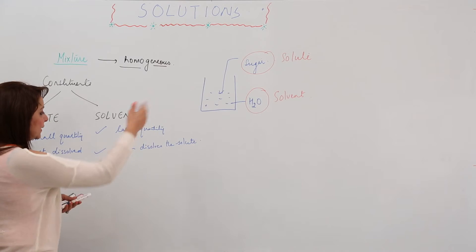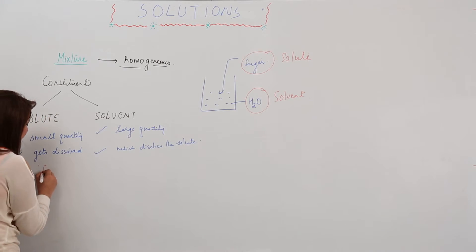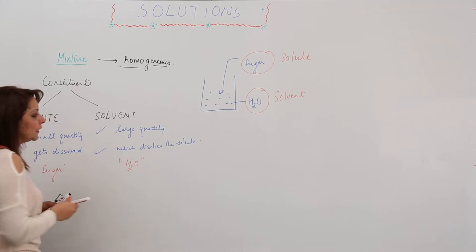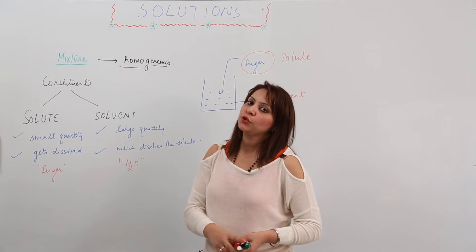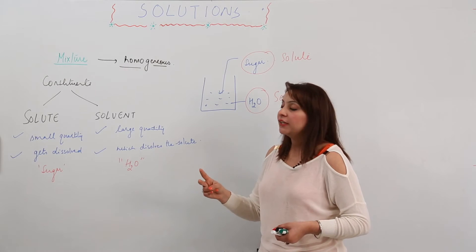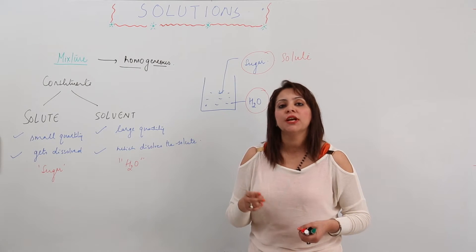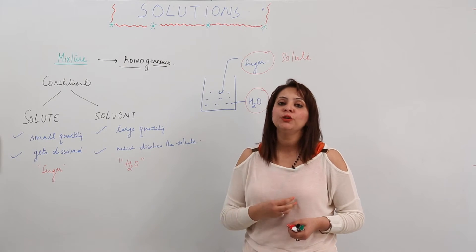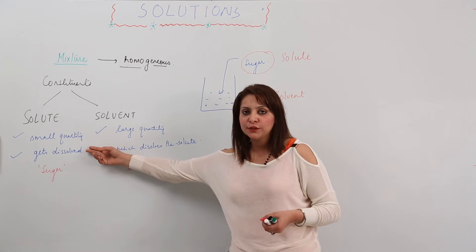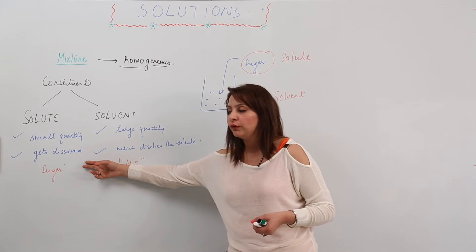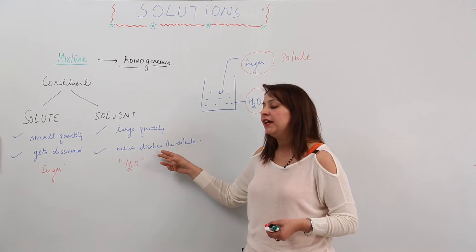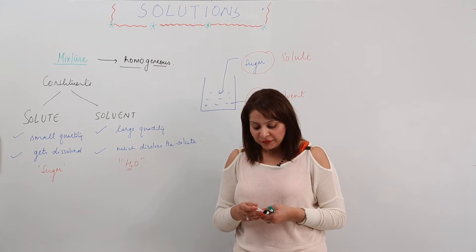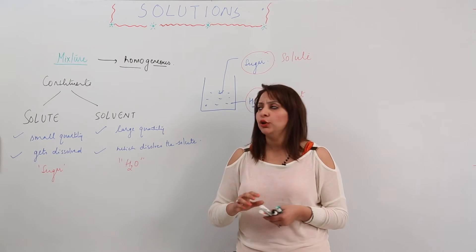In this case, sugar is the solute and water is the solvent. To summarize: first, a solution is a mixture; second, it is homogeneous in nature — meaning uniform composition and properties throughout; third, the constituents are always solute and solvent. The substance present in small quantity that gets dissolved is the solute, and the substance present in large quantity that dissolves the other is the solvent.